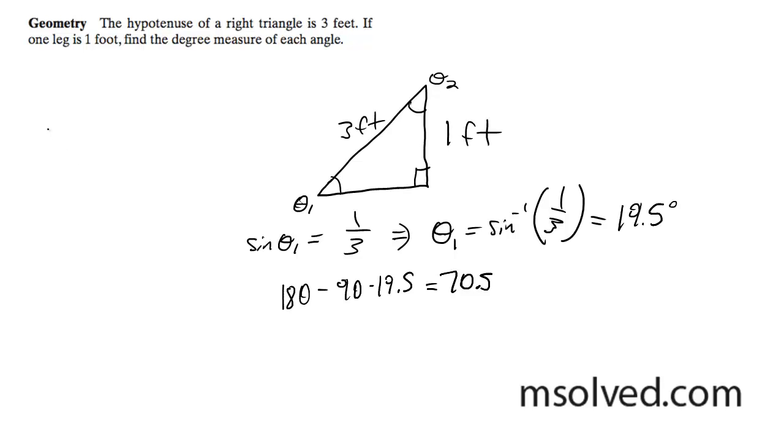So for theta 1, I get 19.5 degrees, and for theta 2, I get 70.5 degrees. That's it.